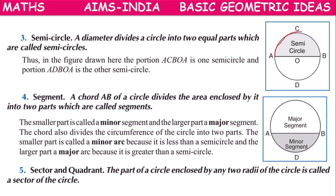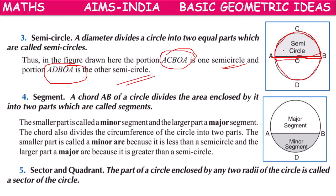Starting from A, going to C, coming back to B through O and back to A — this represents one semicircle. From the downside, A to D to B through O and back to A is another semicircle with center O. For both the circle and the semicircle, the center point is the same, which is O.